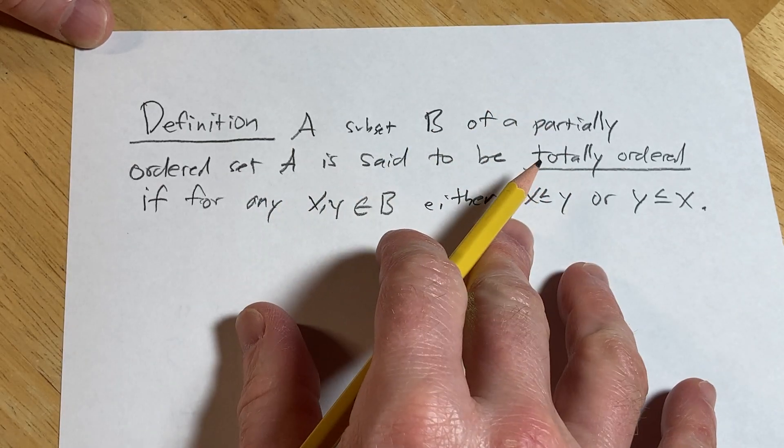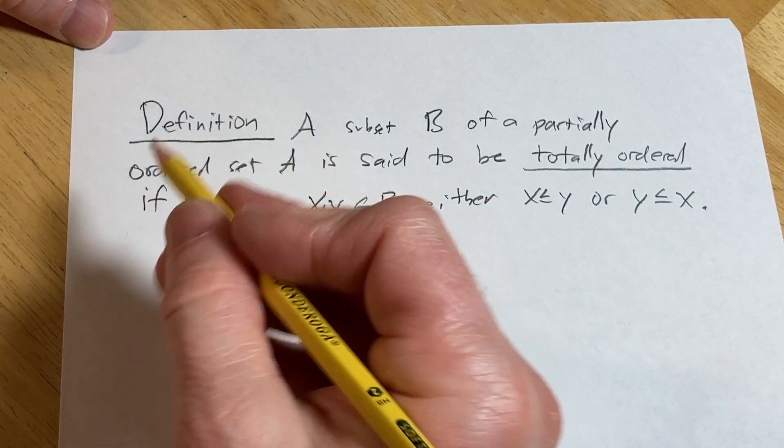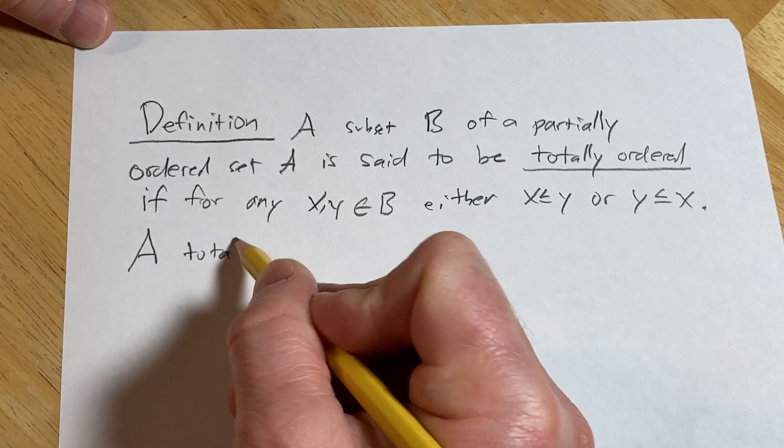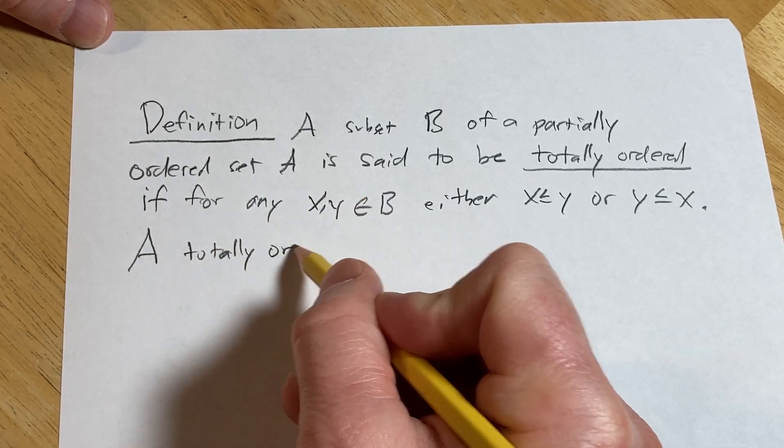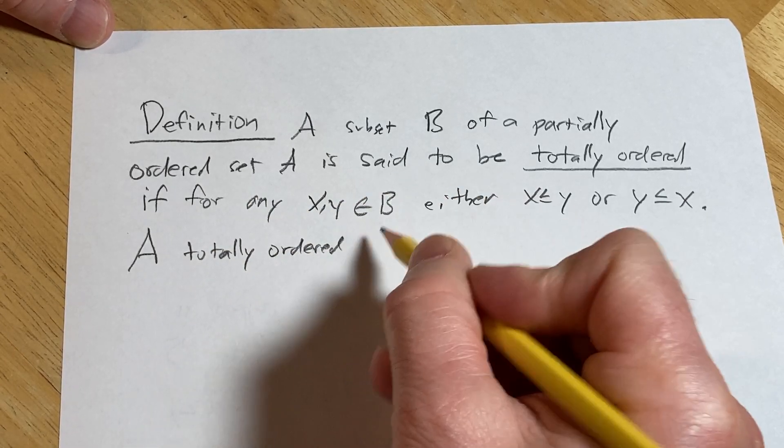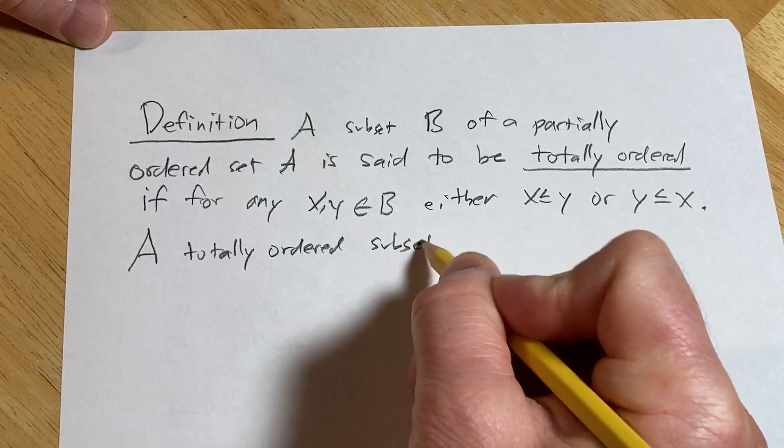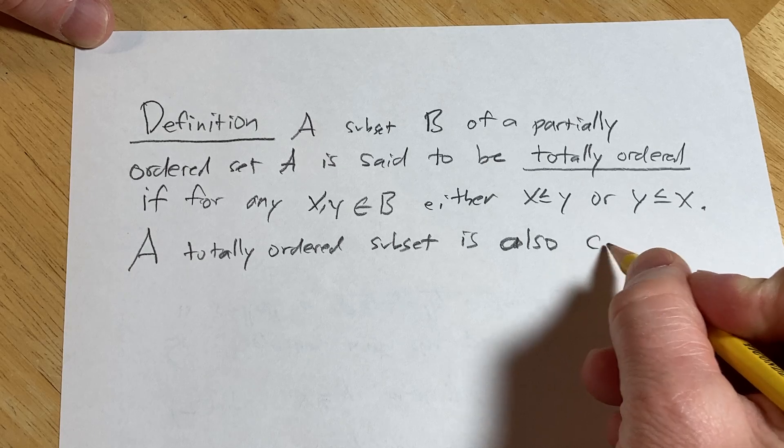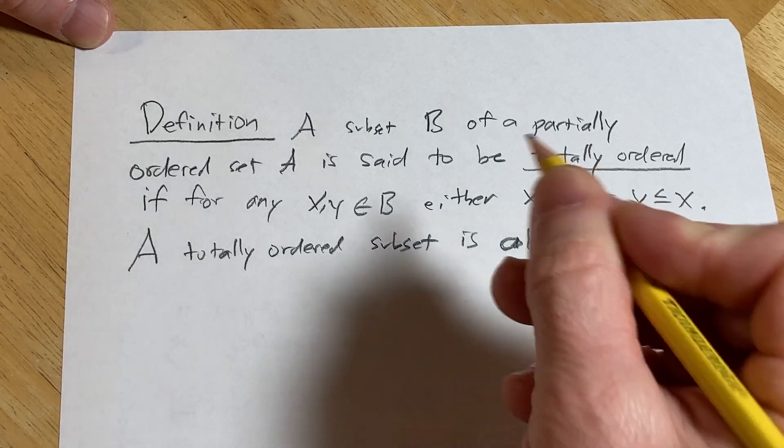A totally ordered subset is also called a chain.